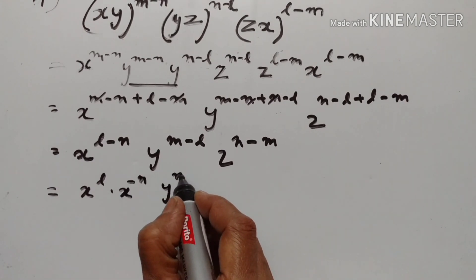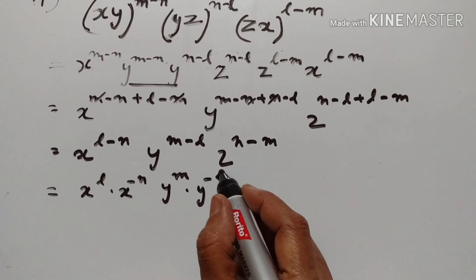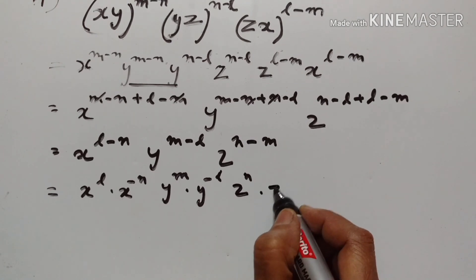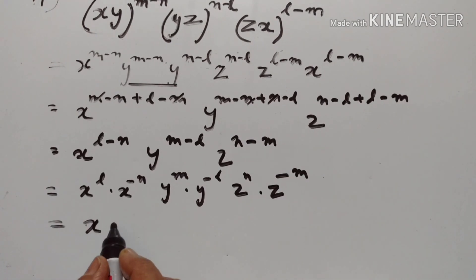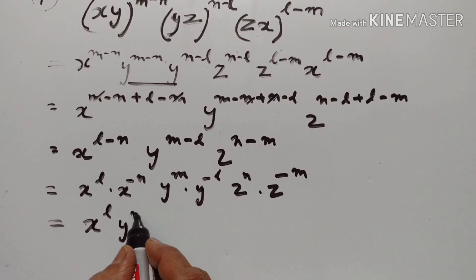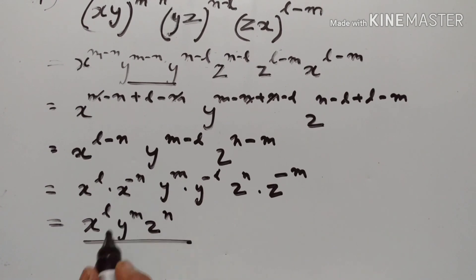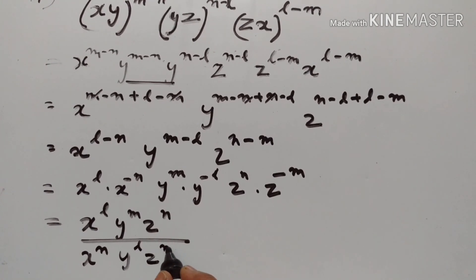y to the power of m, y to the power of minus l, z to the power of n, z to the power of minus m. This is equal to x to the power of l, y to the power of m, z to the power of n, upon x to the power of n. It goes to the denominator: y to the power of l, z to the power of m.